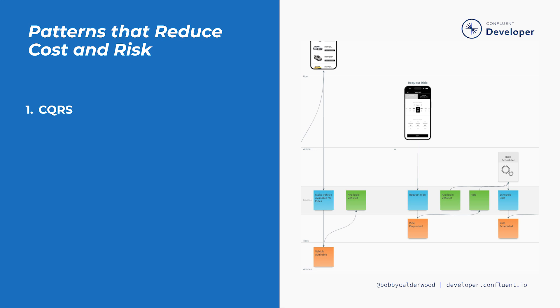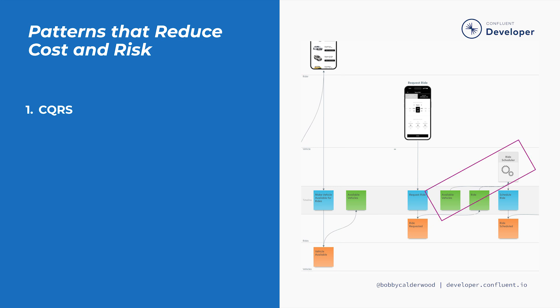By focusing on these essential aspects of information systems, event modeling simplifies the design down to its essential patterns. Event modeling was designed to visually arrange and group system elements to facilitate several proven systems implementation patterns that reduce cost and risk. First, event modeling clearly separates state changes, or writes, from state views, or reads, which is a technique known as CQRS, or Command Query Responsibility Segregation, which we'll describe more in later modules. We'll simply notice in this model snippet that the path for making a vehicle available, from interface to command to event, is distinct from using the available vehicle's read model to make a ride scheduling decision.